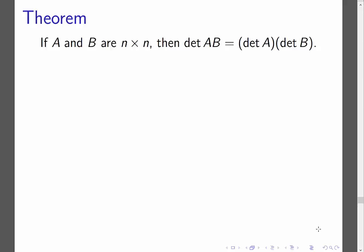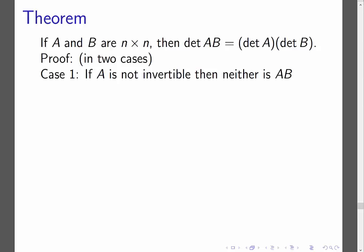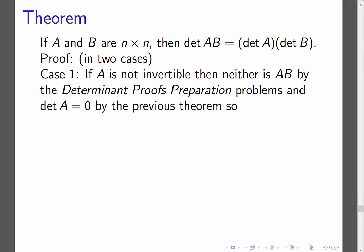So now I want to prove that the determinant of a product is the product of the determinants. My proof is going to be in two cases. Case one: assume A is not invertible. By the preliminary exercise result we just looked at, if A is not invertible, then neither is AB.